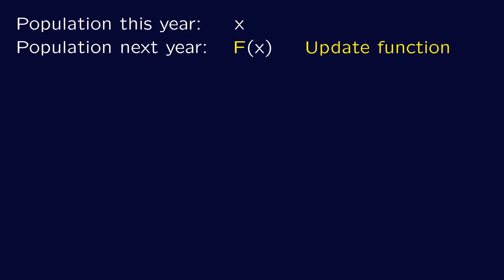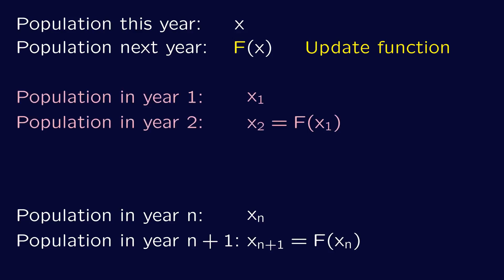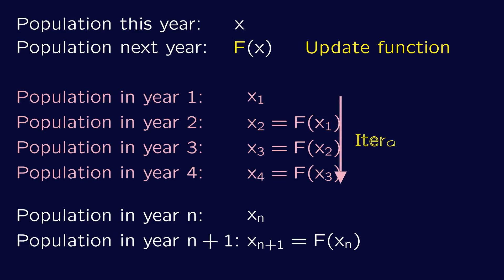If we denote the number of butterflies in year number n by x sub n, then our model states that the population in year n plus 1, so x sub n plus 1, equals f of x sub n. Such repeated application of the same function is called iteration.